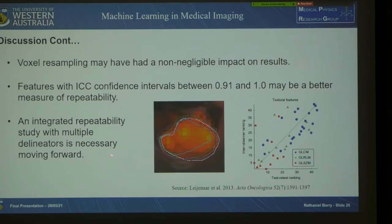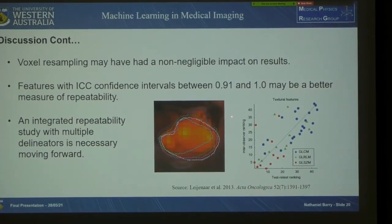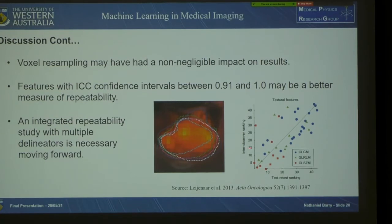An integrated repeatability study with multiple delineating aids is also necessary moving forward. This has been demonstrated in FDG PET, where five observers manually delineate a tumour volume. Looking at the correlation between features stable to inter-observer variability and features stable to test-retest imaging, they were generally consistent — which is good to see.